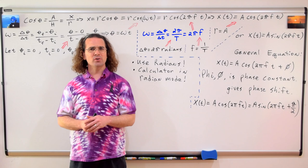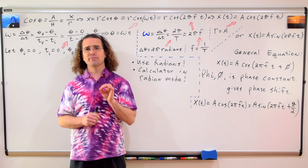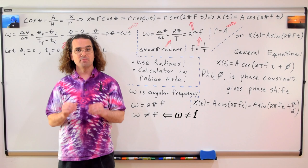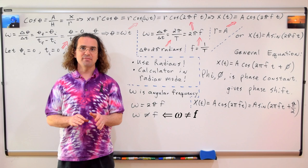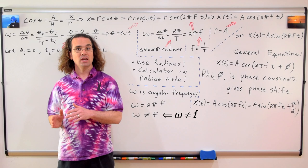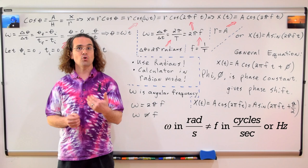Let's go back to that part of the derivation for a moment. The omega in this equation is called angular frequency. Omega is the angular frequency of simple harmonic motion. Please notice, angular frequency omega and frequency lowercase f are not the same. Angular frequency equals 2 pi times frequency. Angular frequency is in radians per second and frequency is in cycles per second or hertz, so not the same thing.